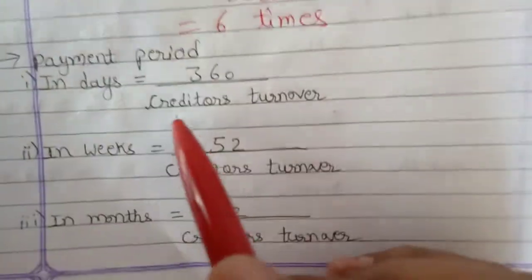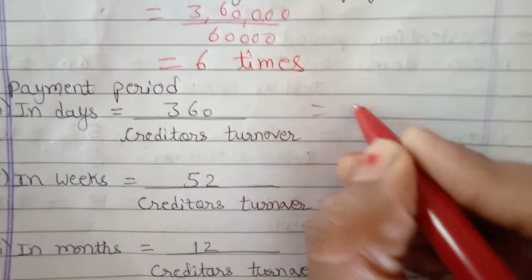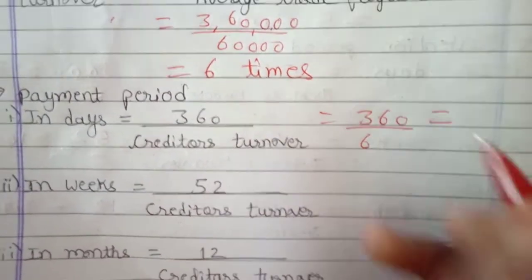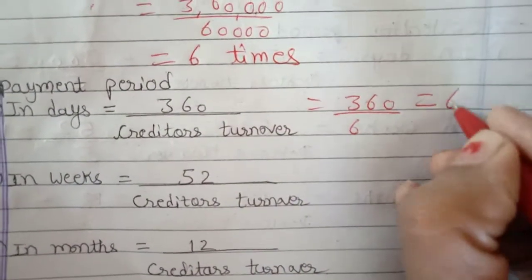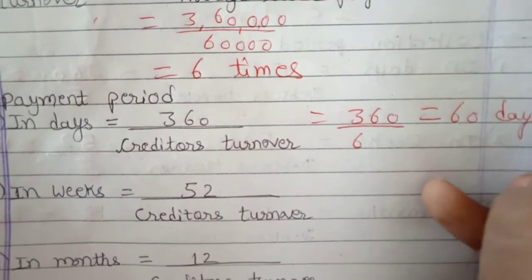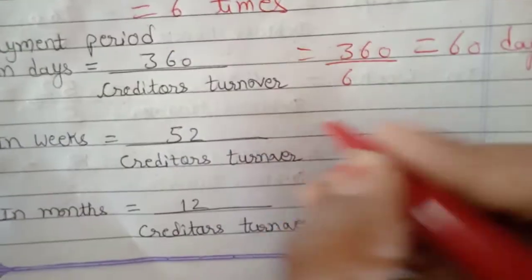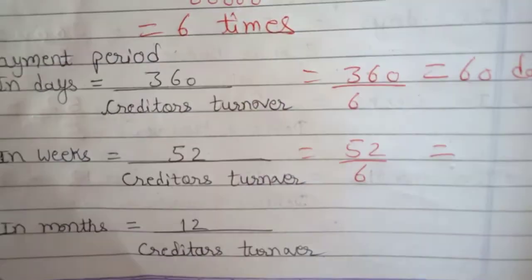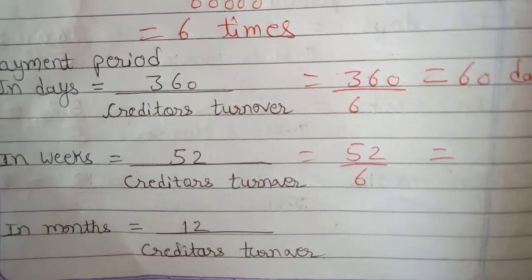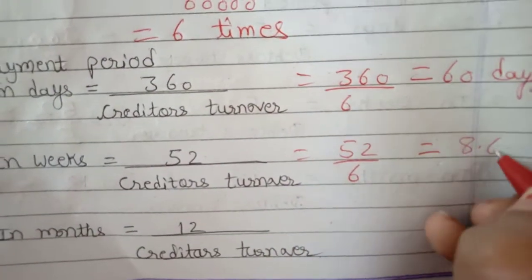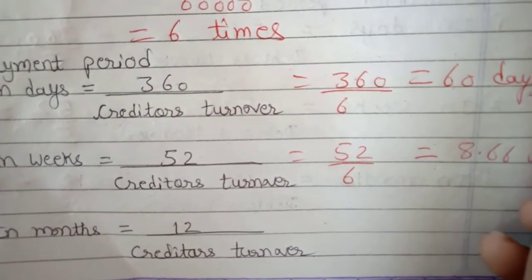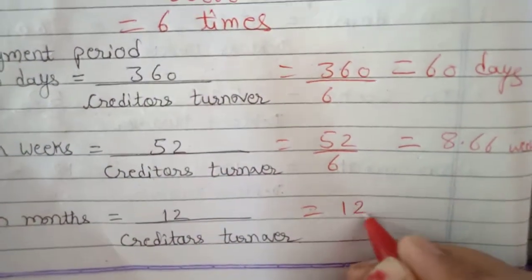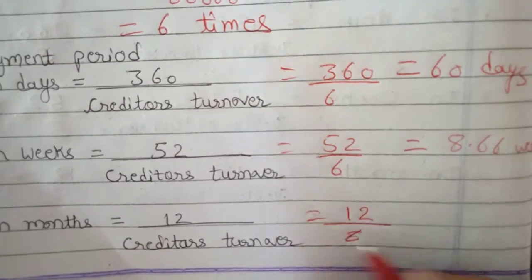Payment period in days: 360 divided by creditors turnover of 6 equals 60 days. In weeks: 52 divided by 6 equals 8.66 weeks. In months: 12 divided by 6 equals 2 months.